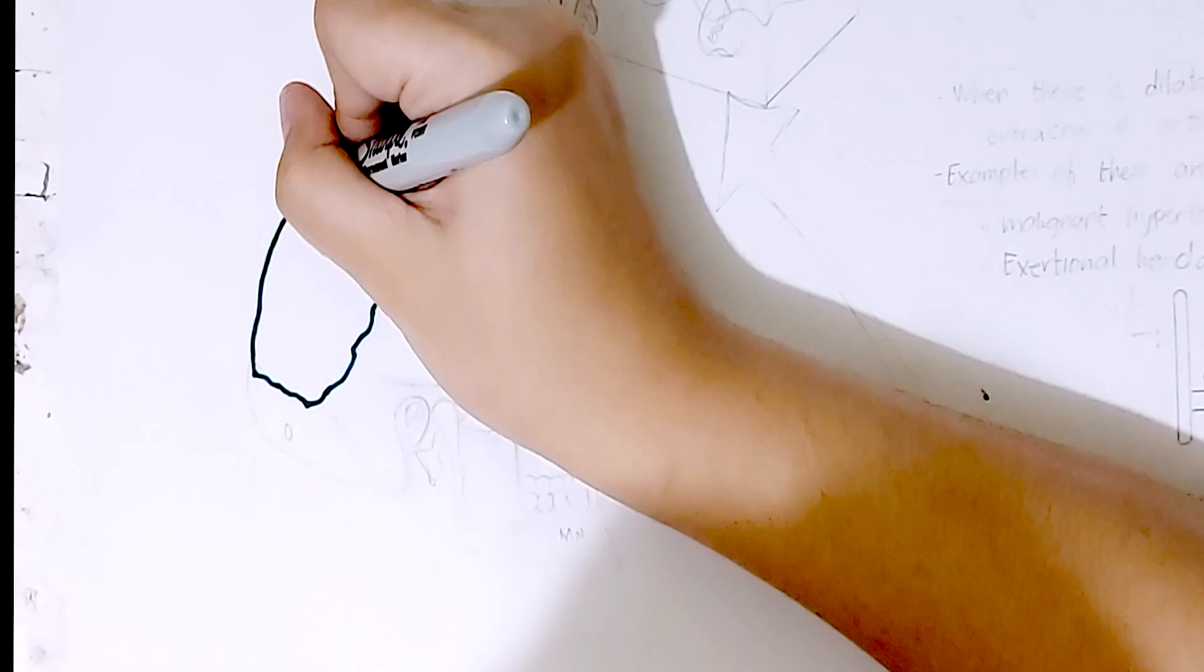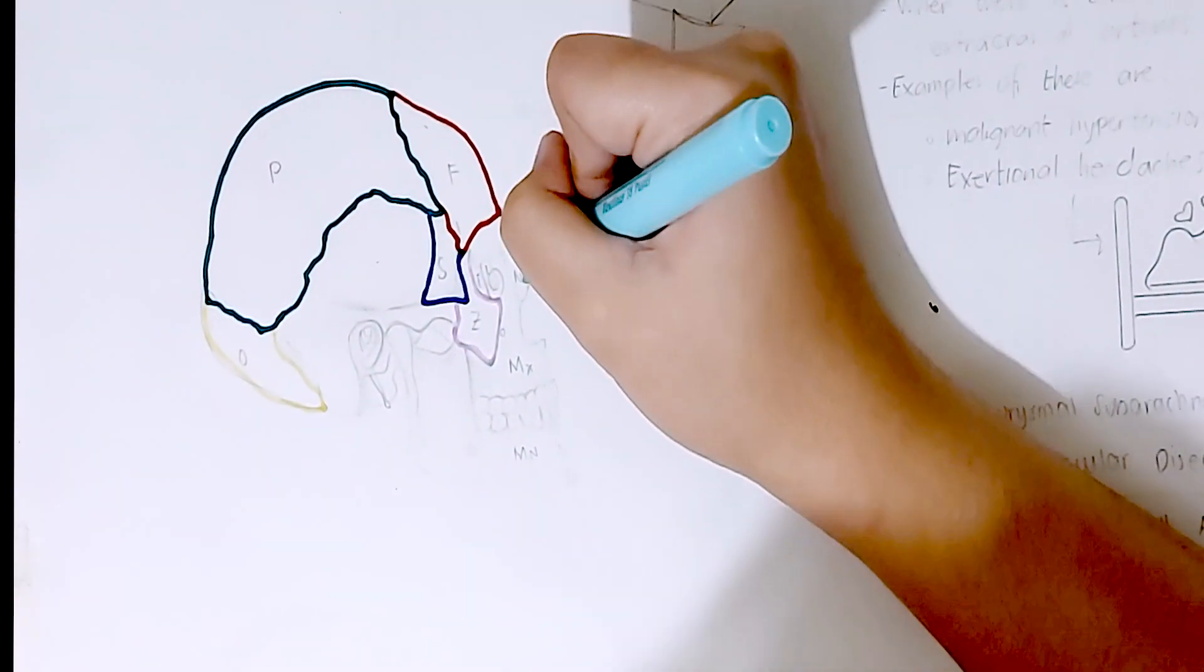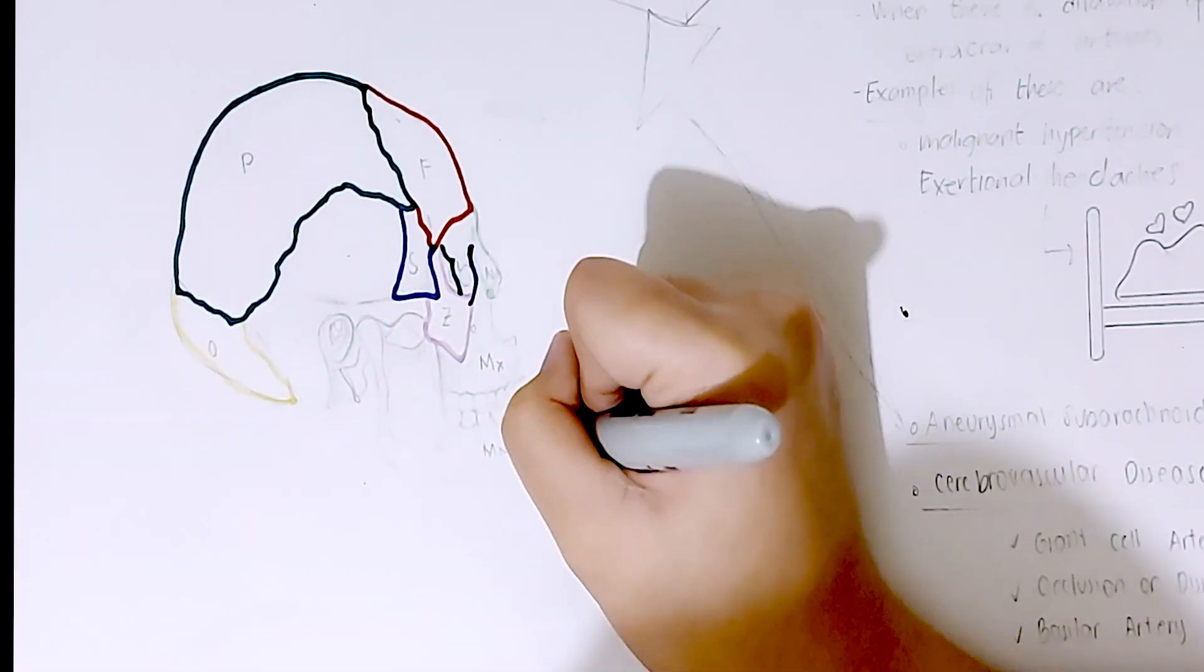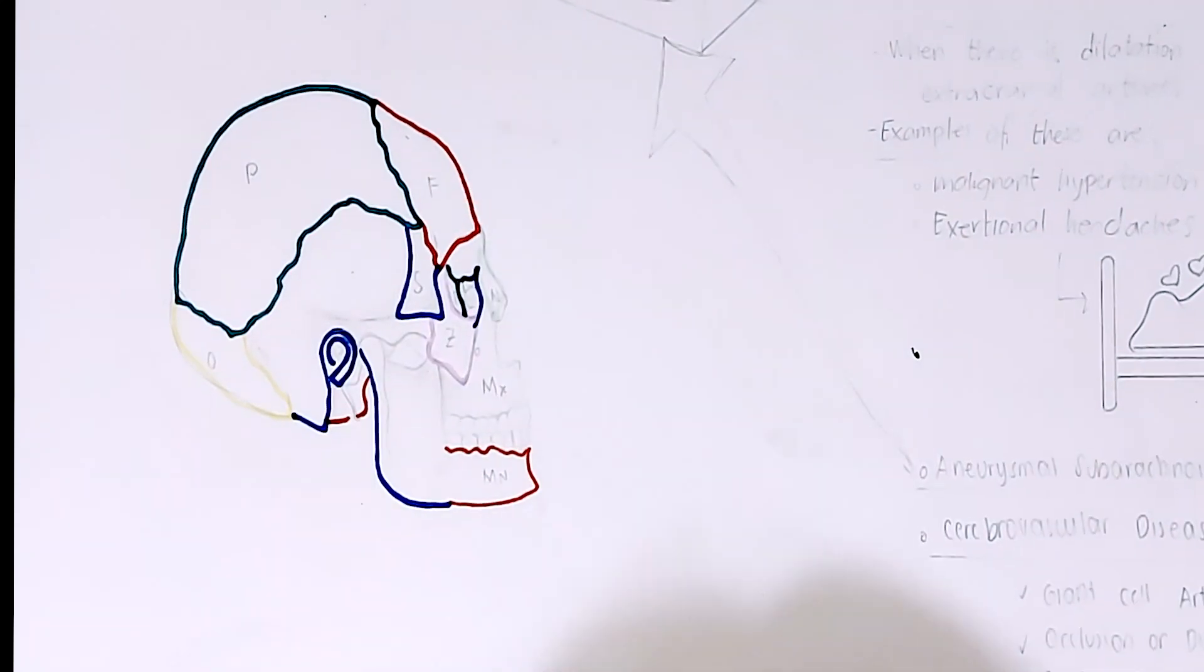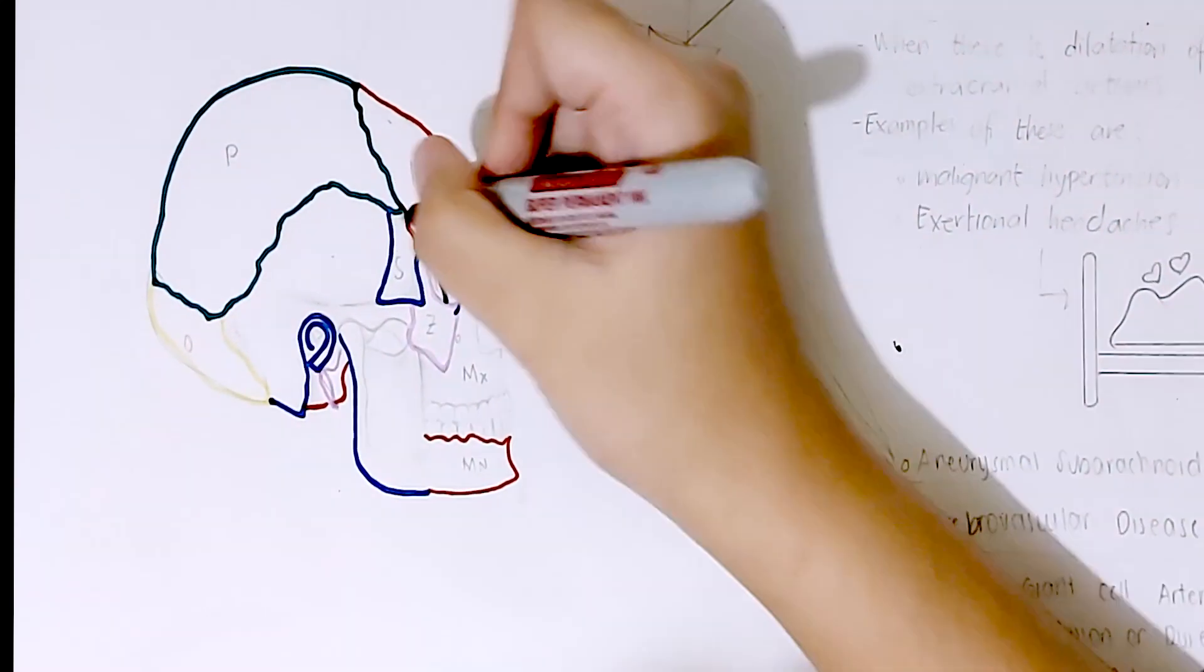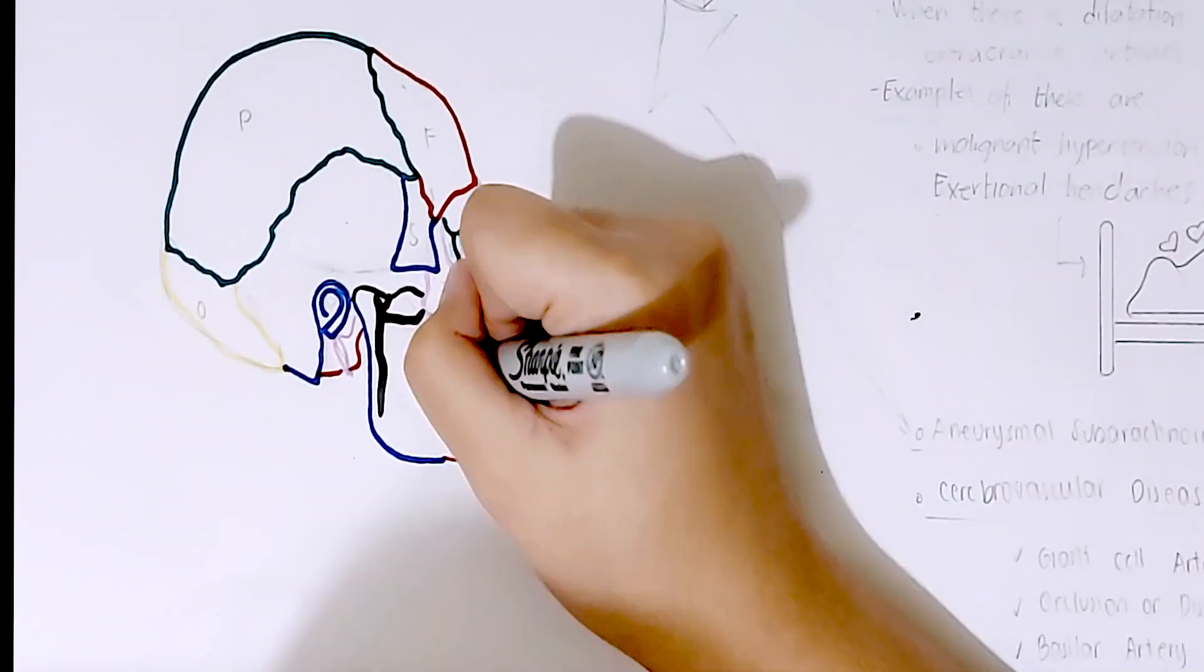But before jumping to the pain-sensitive areas of the head and the mechanisms of how this pain occurs, let us first have a brief review on the anatomy of the head. The head is formed mainly by the skull, with the brain and its covering meninges enclosed in the cranial cavity.